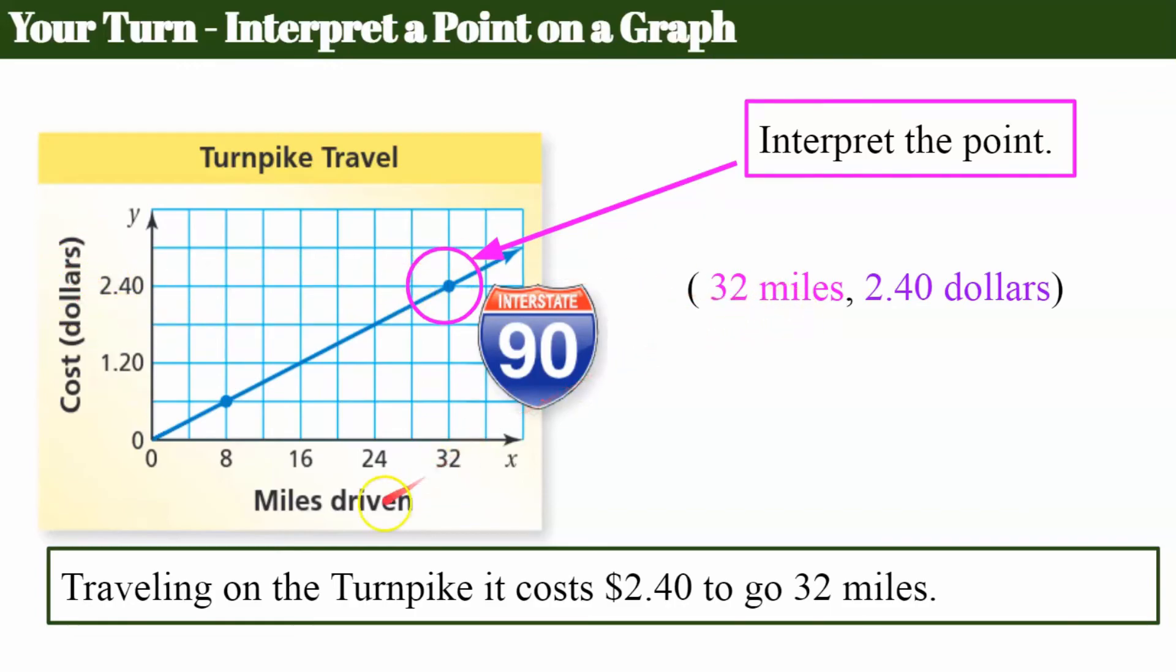So labeling this, my x-axis, my x-coordinate is in miles, and my y-axis is the cost in dollars. So now I have my units. So my three parts. This is about traveling on the turnpike, going 32 miles, and a cost of $2.40. So here's my sentence. Traveling on the turnpike costs $2.40 to go 32 miles.